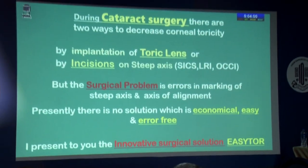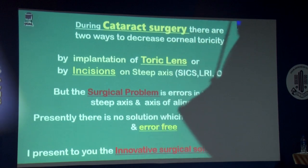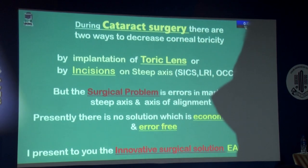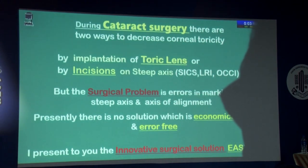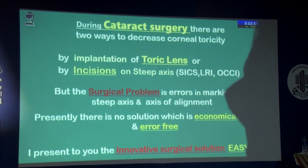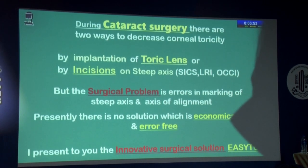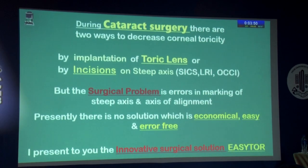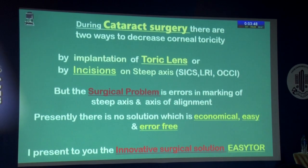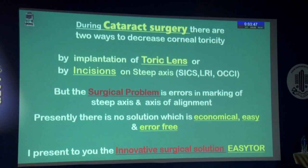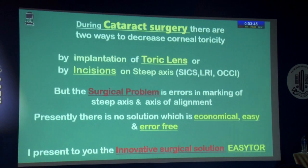During cataract surgery, there are two ways to decrease the corneal toricity: either you implant the Taurik lens or you take the incision on the steep axis. The surgical problem is there is error in the marking of the steep axis and marking of the axis of alignment. Presently there is no solution which is economical, easy, and error free. I present to you the innovative surgical solution — Easy Taur.